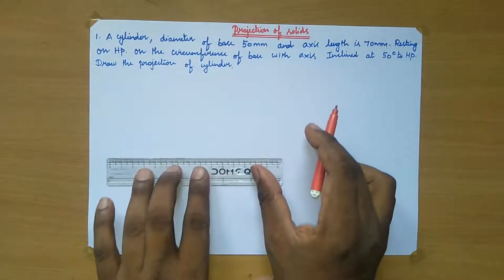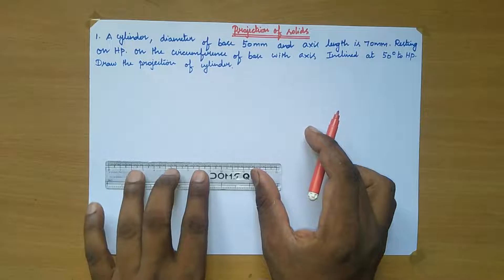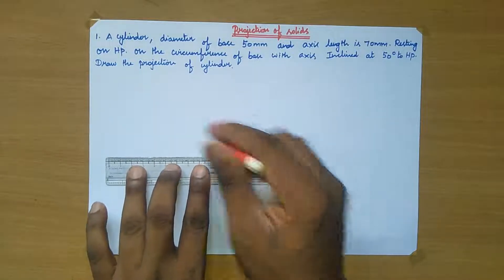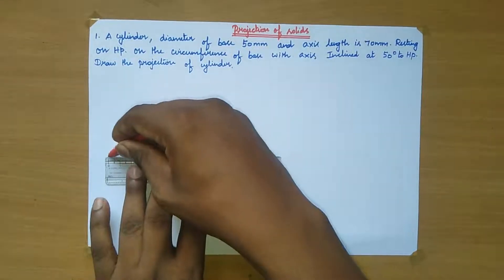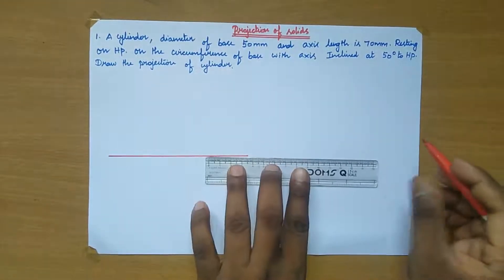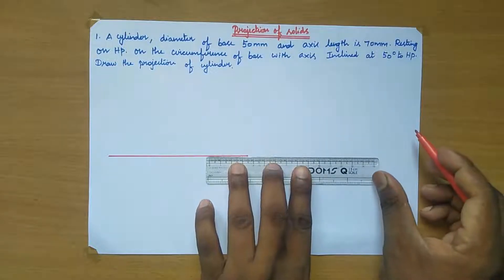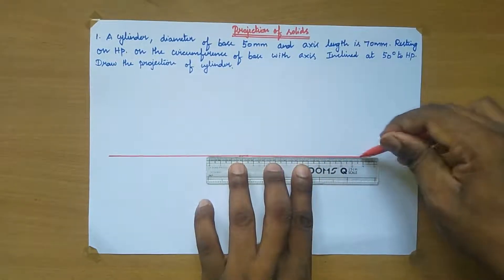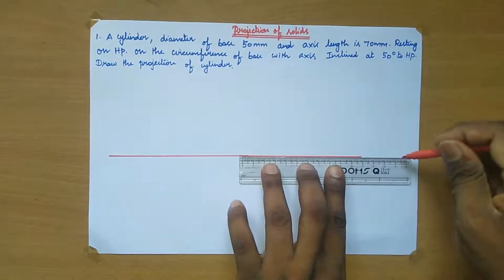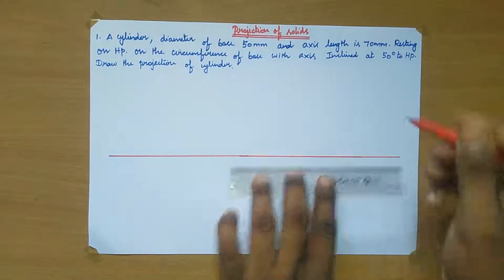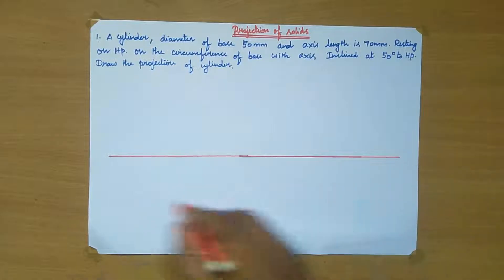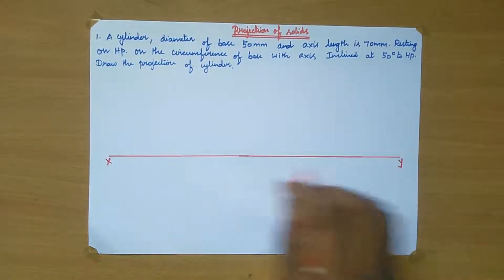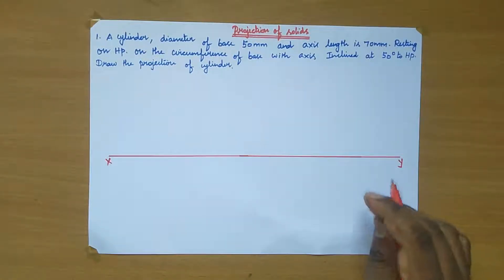With the help of given data, we are going to draw one reference line. Draw one reference line like this and name this point as X and Y. First of all, draw the reference line.